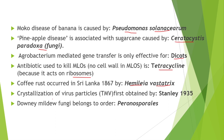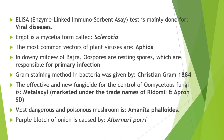Crystallization of virus particles was first obtained by Stanley in 1935. Downy mildew fungi belong to the order Peronosporales. The ELISA (enzyme-linked immunosorbent assay) test is mainly done for viral diseases. Ergot is a mycelial form called sclerotia. The most common vector of plant viruses is aphids, but for mosaic viruses it is whitefly.